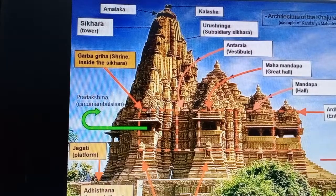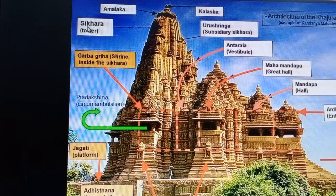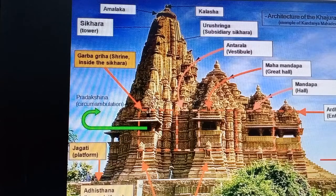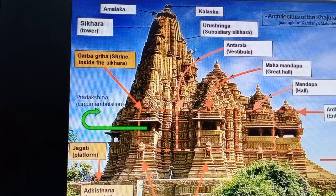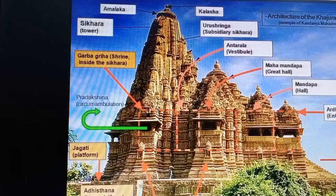So the top part of the temple will be over the Garbhagriha. We call it the Shikara — this is the Shikara, or tower. Here inside is the statue of God, and just above that is the highest top part of the temple. Different kinds of stones and decorations are done — small, intricate decorations all over.